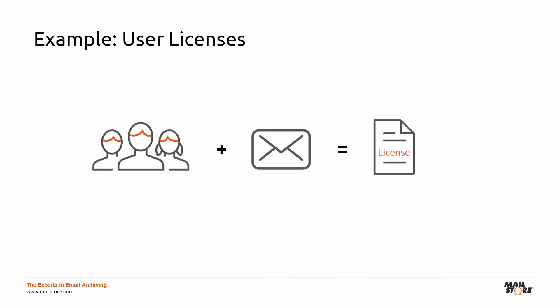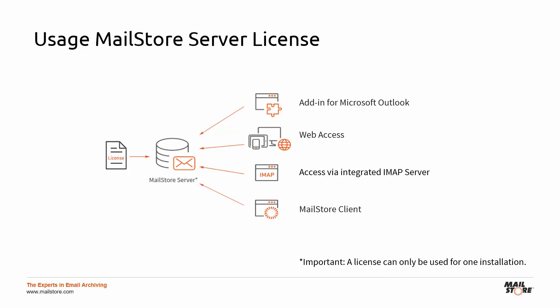So, for example, if you have 20 users and 5 shared mailboxes or public folders that you wish to archive, you will need to buy 25 user licenses. Please note that you may use your Mailstore Server license for one installation only. This means you will install Mailstore Server on your central machine and then use the Mailstore client, the add-in for Microsoft Outlook, or Mailstore Web Access to enable users in your company to access the archive.